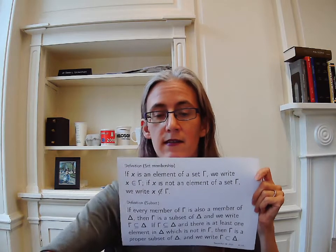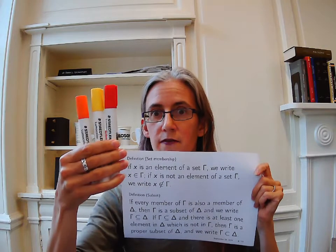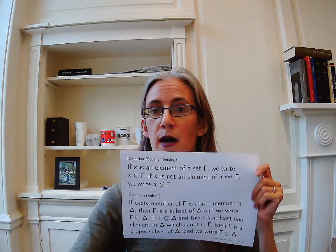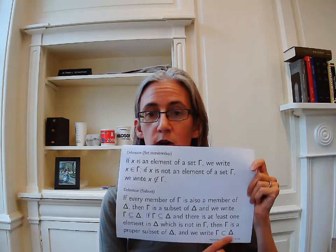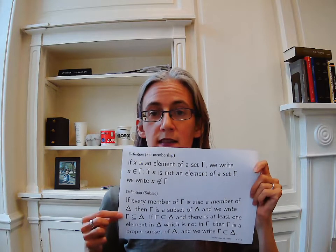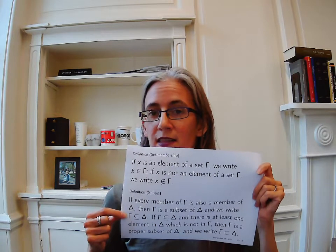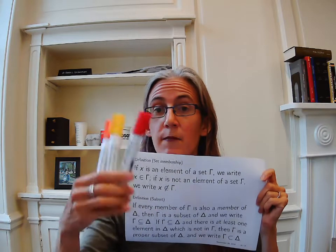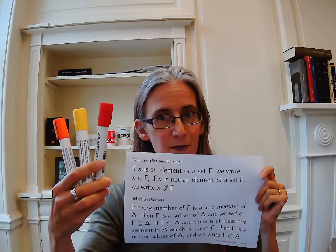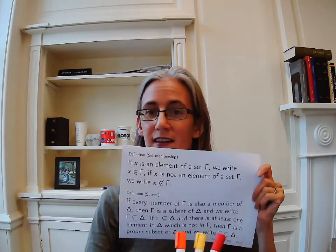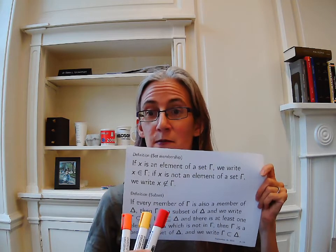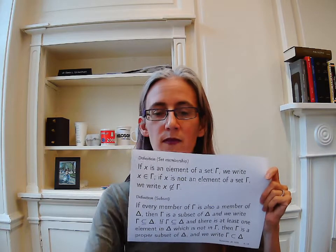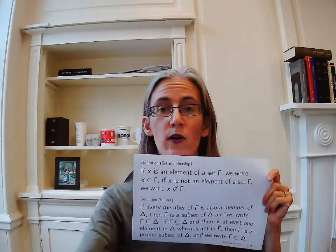Now, if every member of this set is also a member of this set, but the bigger set has something that isn't in the first one — namely this red marker here — then we say that the smaller set is a proper subset of the bigger one, and we write this. The difference between the subset symbol and the proper subset symbol is the lack of the line underneath — the line is like the standard identity symbol you get in mathematics. So the set that contains these three markers is a subset of the set that contains these three markers, because if every member of this set is also a member of this set, then it's a subset. So subsets can either be proper subsets or they can be identities.